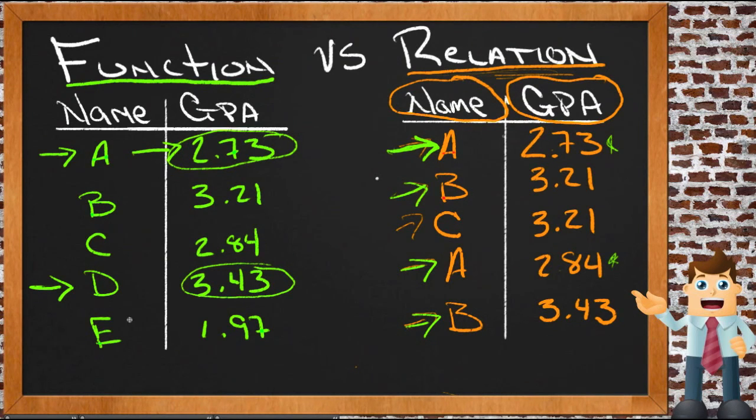You can trust whatever you put in for the input of the function—in this case the student name—whenever I put in a specific student name I will always get the same GPA. I can trust that I will always get the same answer.